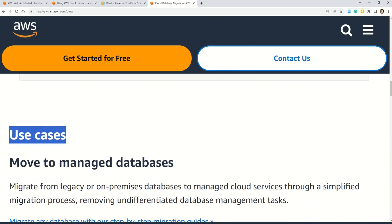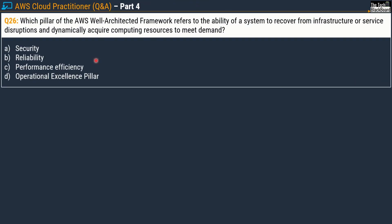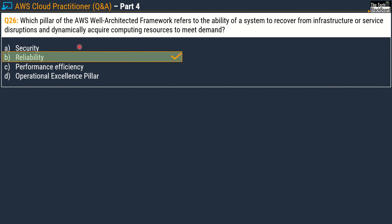Question 26: which pillar of the AWS Well-Architected Framework refers to the ability of a system to recover from infrastructure or service disruptions and dynamically acquire computing resources to meet the demand? Options are Security, Reliability, Performance Efficiency, or Operational Excellence. The correct answer is Option B, the Reliability pillar.